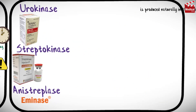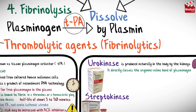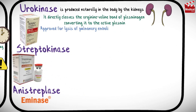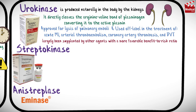Urokinase is produced naturally in the body by the kidneys. It directly cleaves the arginine-valine bond of plasminogen, converting it to the active plasmin. It is only approved for lysis of pulmonary emboli, but may also be used off-label in the treatment of acute myocardial infarction, arterial thromboembolism, coronary artery thrombosis, and deep venous thrombosis. Its use has largely been supplanted by other agents with a more favorable benefit-to-risk ratio.